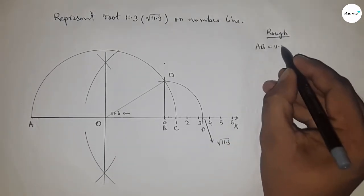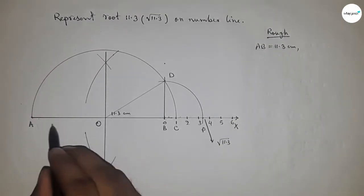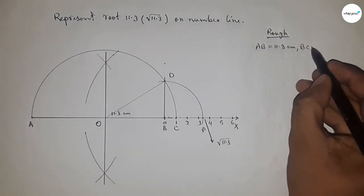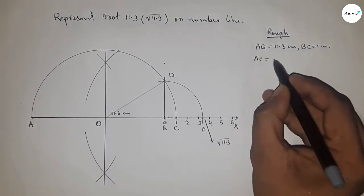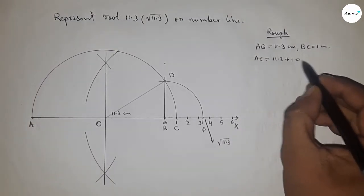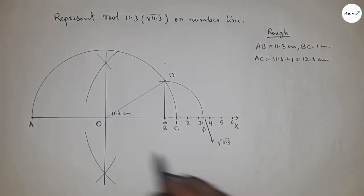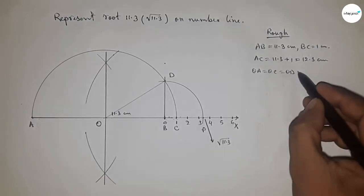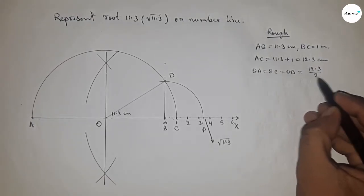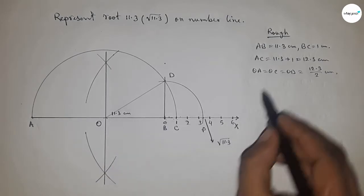Equal to 11.3 centimeter, BC equal to 1 centimeter. So we can write AC equal to 11.3 plus 1, so 12.3 centimeter. Now radius OC, OD, and OA equal to 12.3 by 2 centimeter. Now distance OB equal to OC minus BC.